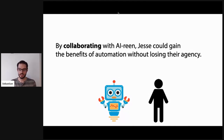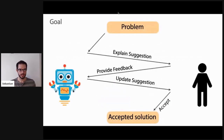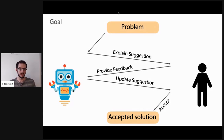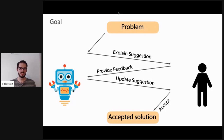We can conceive a scenario in which Irene and Jesse are actually collaborating. Jesse could gain the benefits of automation without losing agency over the work. What does it mean to collaborate with Irene? Imagine a dialogue forth and back, where Irene comes up with an initial suggestion — some generated text — and then explains its suggestion to Jesse. Jesse can then provide fine-grained feedback on the text, similar to collaborating with another human writer. Irene would incorporate the feedback and update the suggestion, and Jesse can accept or give another round of feedback.